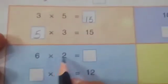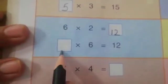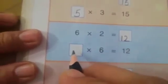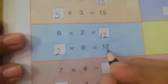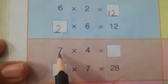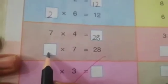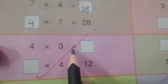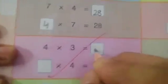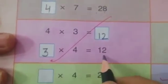6 multiply by 2 — 6 2s are 12. Now change the order: 6 multiply by 2 and we will write here 2 multiply by 6 is equal to 12. 7 multiply by 4 — 7 4s are 28. 4 multiply by 3 is 12. Now change the order — 3 multiply by 4 is equal to 12.